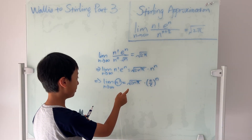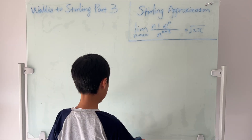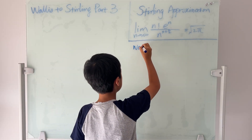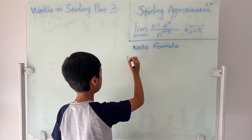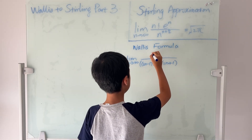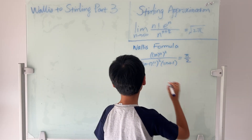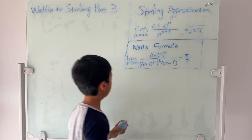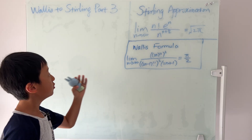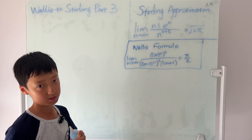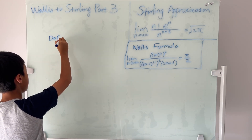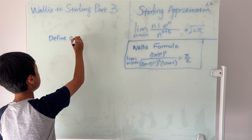We're actually not going to focus on that one — we're going to still focus on this one. I'll write the Wallis formula as well. So the goal is to use a known limit — the Wallis formula — to prove an unknown limit, the Stirling approximation. Our first step is to define a_n to be this.